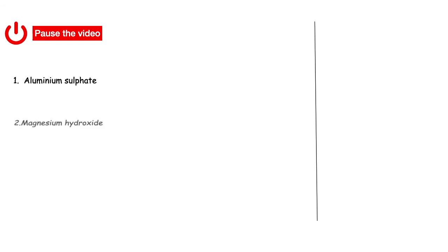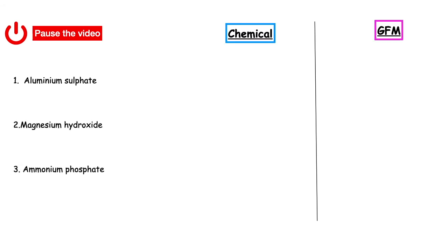In past papers, you will be given the chemical formula for the substance that you have to work out the GFM for. However, for a bit of practice, I have got three different compounds which use the group ions, and what I'd like you to do is work out the chemical formula first, and then have a go at working out the gram formula mass. If you want to pause the video, when you're ready you can resume, and the answers will pop up on the screen for you.